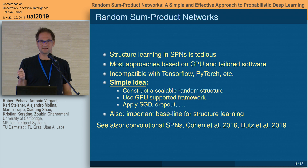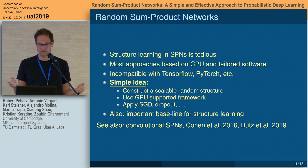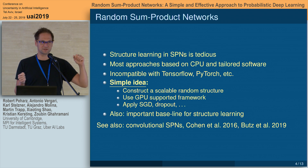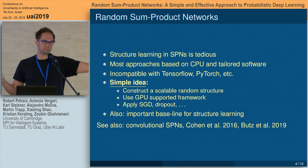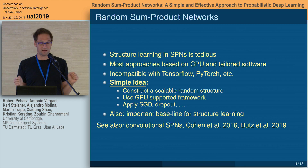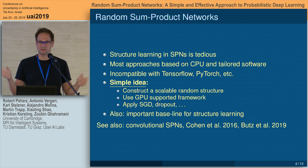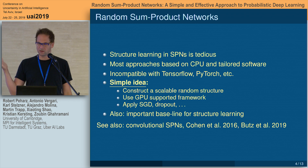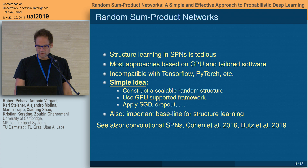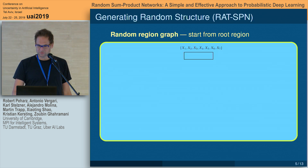So the idea is: let's forget about structure learning. Just take a randomized structure in a scalable manner — come up with a random procedure to generate a random SPN of arbitrary size and just fit the parameters. Implement it on TensorFlow, use GPU support, auto-differentiation, and the like.